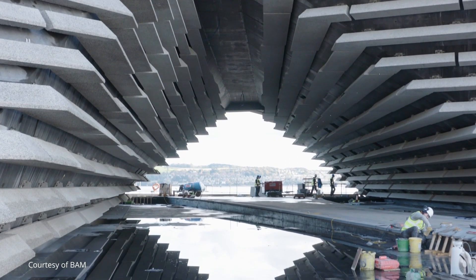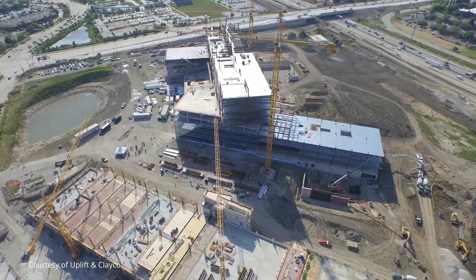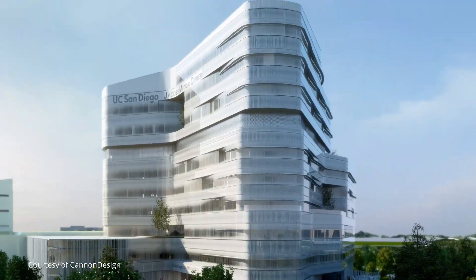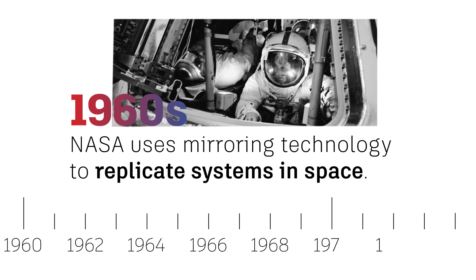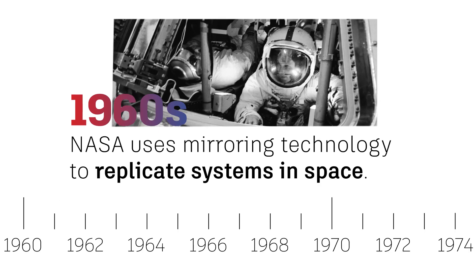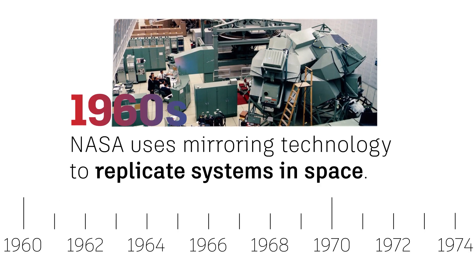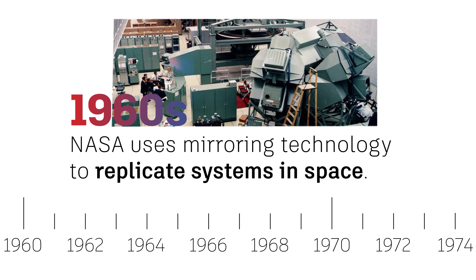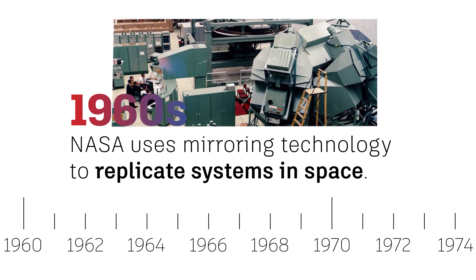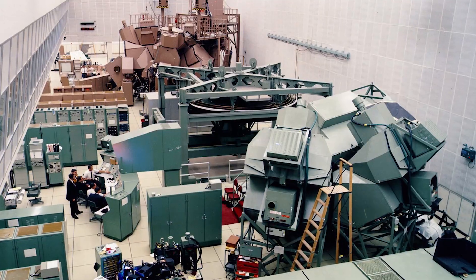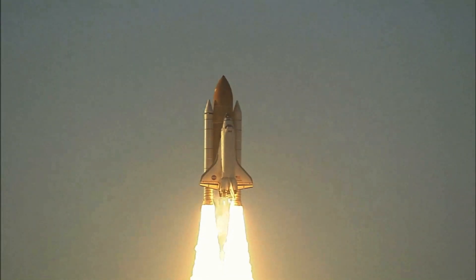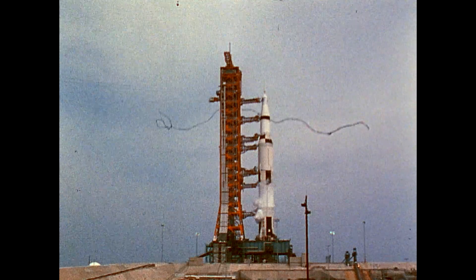Building owners can view areas where the building is aging or faulty and make improvements. On a greater scale, multiple digital twins can be integrated in an entire ecosystem. In the 1960s, NASA was one of the first agencies to use mirroring technology to replicate systems in space. Notably, NASA created a replica of Apollo 13, which became critical in the midst of its challenging mission.